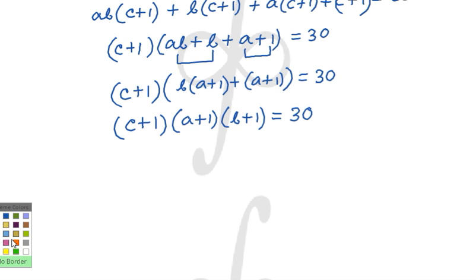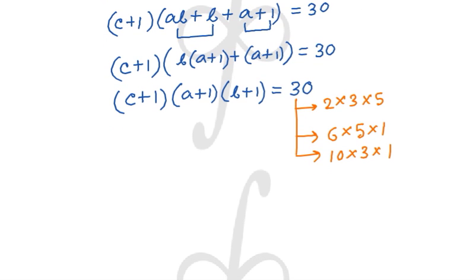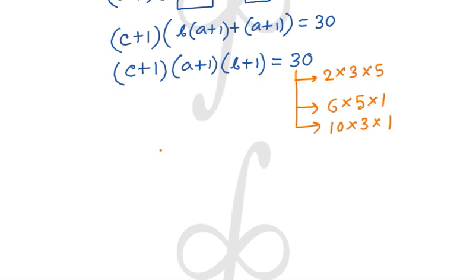Now we find all possible ways to write 30 as a product of three natural numbers. The possibilities are: 2 × 3 × 5, then 6 × 5 × 1, and finally 10 × 3 × 1. These are the three cases we need to consider for the values of (A+1), (B+1), and (C+1).